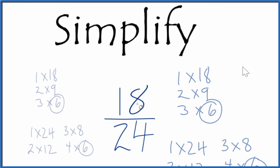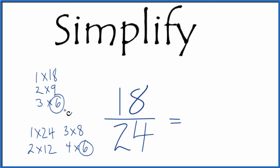So 18 divided by 6, that gives us 3, and then 24 divided by 6, that's 4. So we've simplified or reduced 18/24ths down to 3/4ths. We can't reduce this any further. These are equivalent fractions.